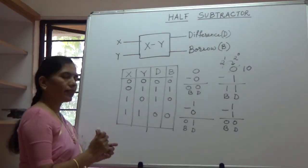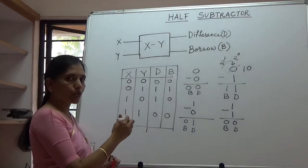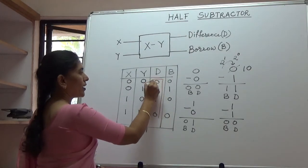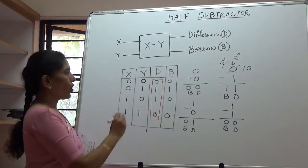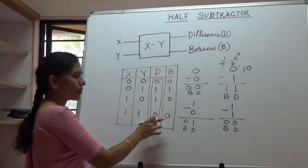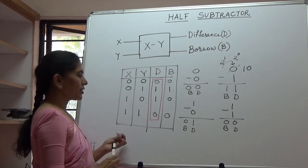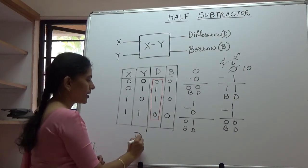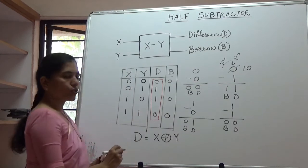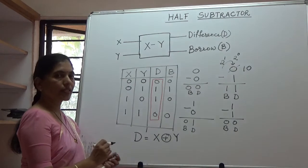Having obtained the truth table, if we look at this truth table carefully and see both the outputs, let's look at the difference output. If we see these outputs for all possible four combinations of X and Y, the difference output resembles the output of an XOR gate. Therefore, the difference equation can be written as X XOR Y. If the two inputs are XORed, they would result in the difference output.